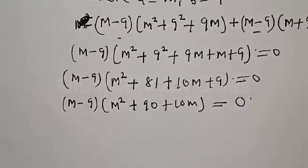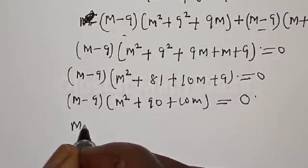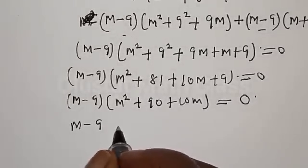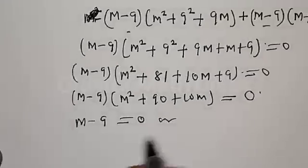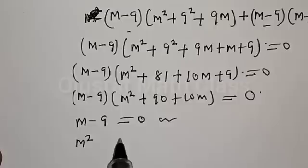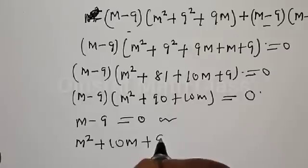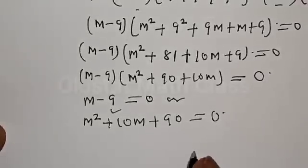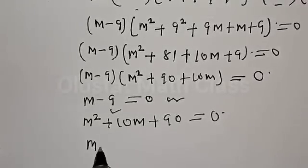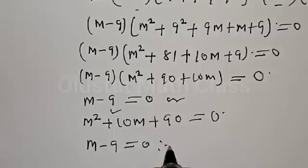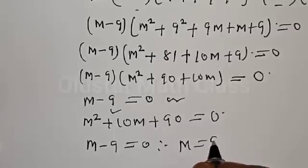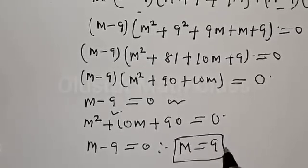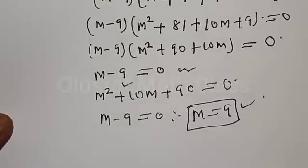From m minus 9 equals zero, we get m equals 9 for the first case. For the second case, we have m² + 10m + 90 equals zero, which is a quadratic equation. Let's use the quadratic general formula.